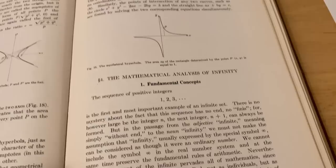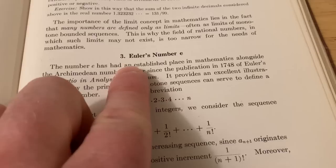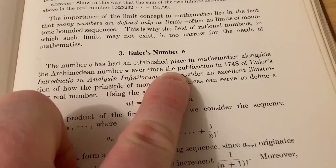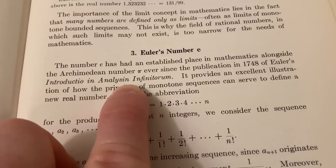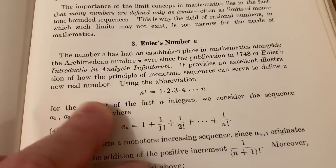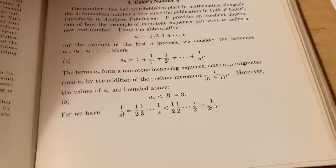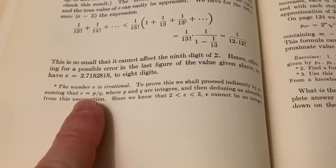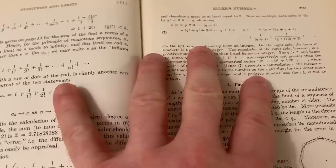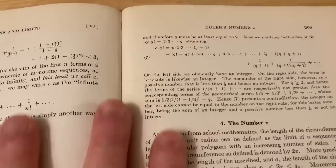Here he talks about Euler's number e. He talks about how it has had an established place in mathematics alongside the Archimedean number pi ever since the publication in 1748 of Euler's Introductio in Analysin Infinitorum. And it provides an excellent illustration of how the principle of monotone sequences can serve to define a new real number. And he goes through it here and defines the number e. And then if you turn the page here, he proves that e is irrational. So he gives a little proof here showing that it's irrational. And now to understand this proof, you do have to read all of this because he uses some of the information on this page. But anyone with some math background, I think, could actually understand this.